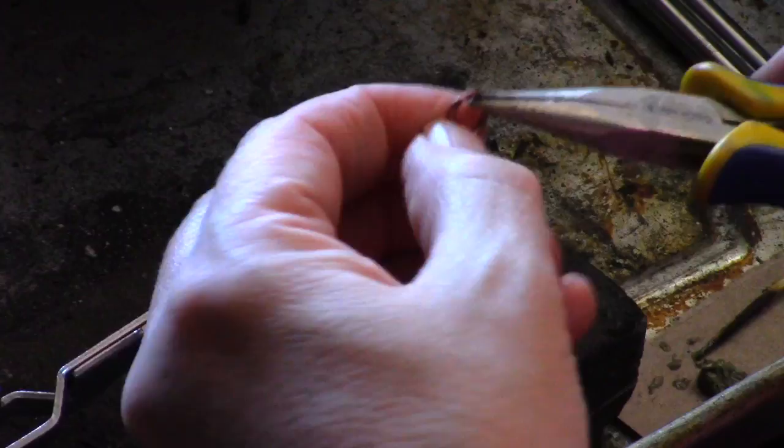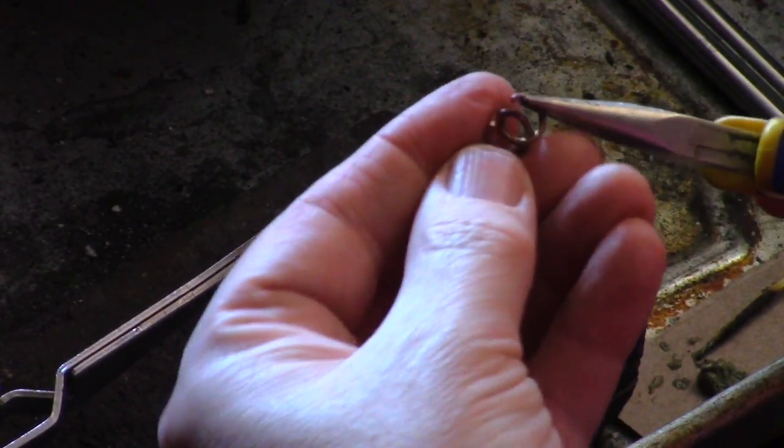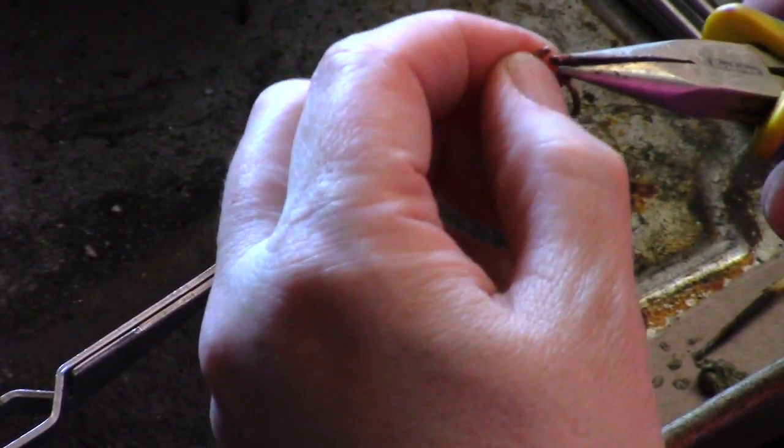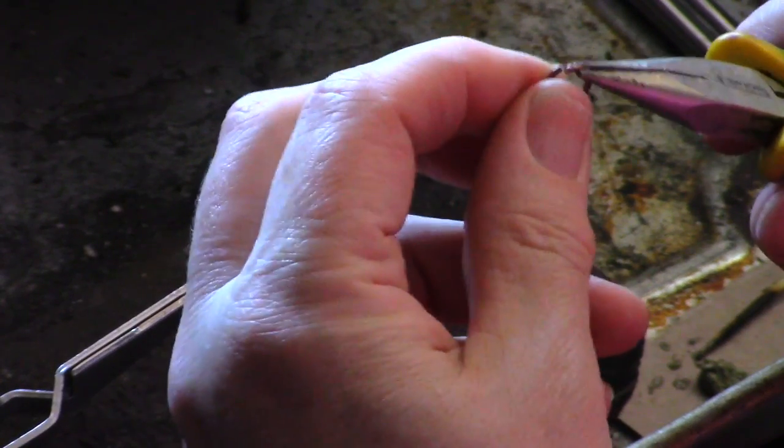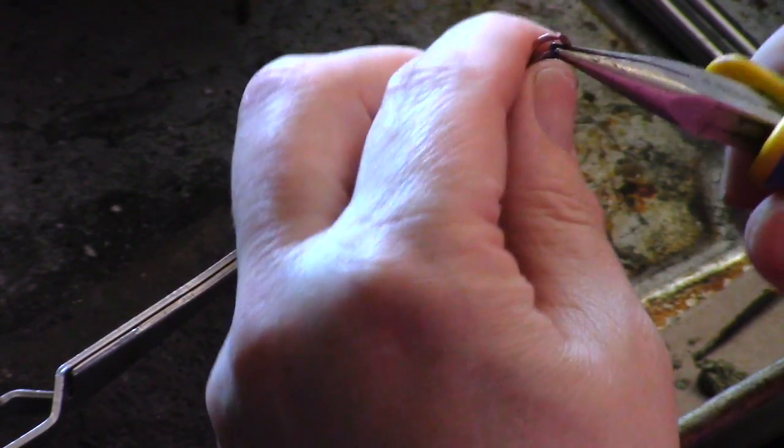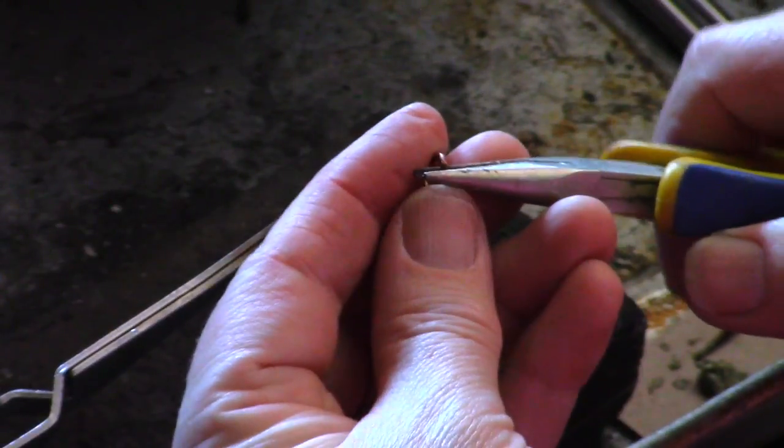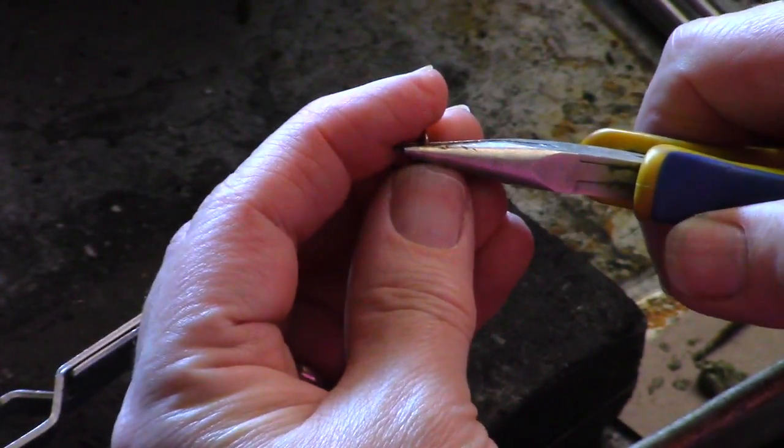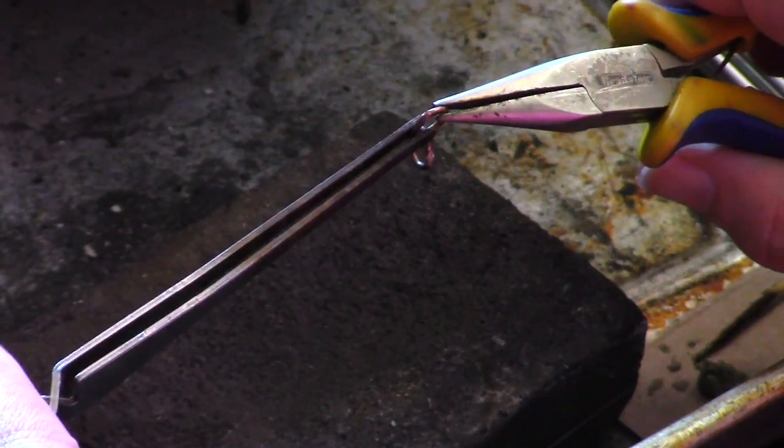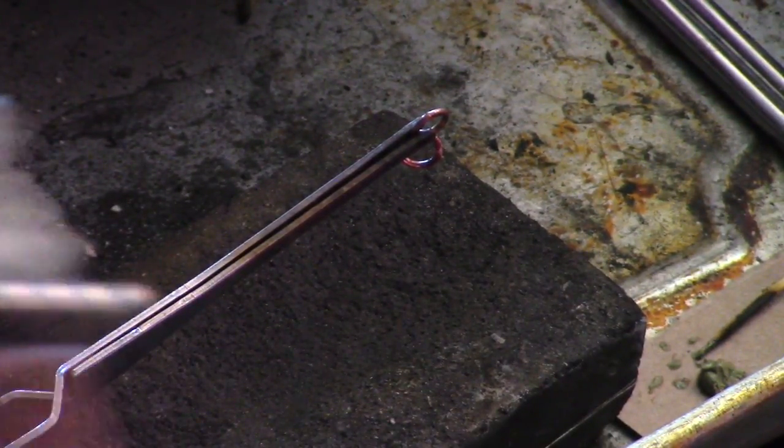Now I'm just going to take the same circle that I just soldered and then add another jump ring to it. Close that jump ring up nice and tight as I did before because you want to have the edges as close as possible. It'll give you a better joint when you solder it. And just back into my third hand, the exact same procedure.